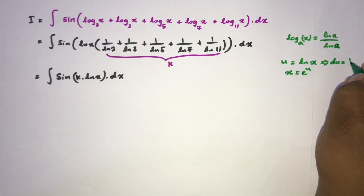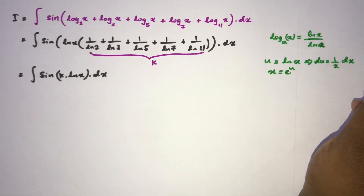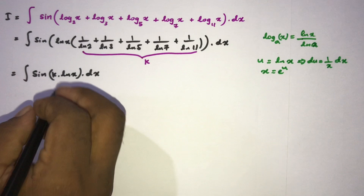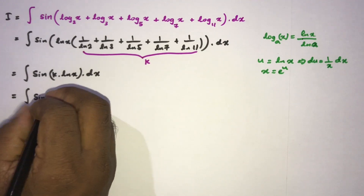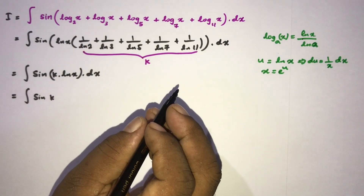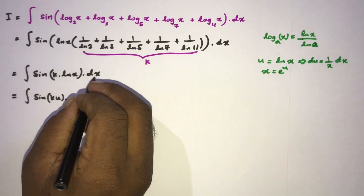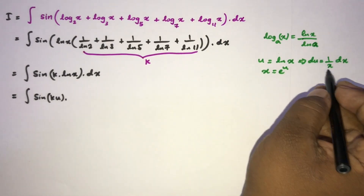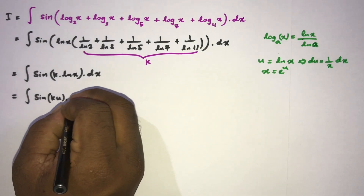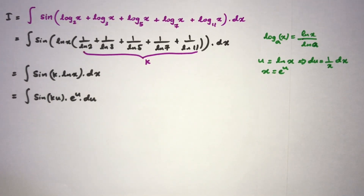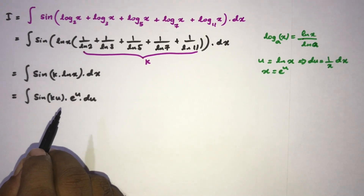After substitution, we have du equals 1 over x dx. Plugging in, sin(ku) and dx becomes e to the u du. Now we have a product of two functions, so we apply integration by parts (IBP).